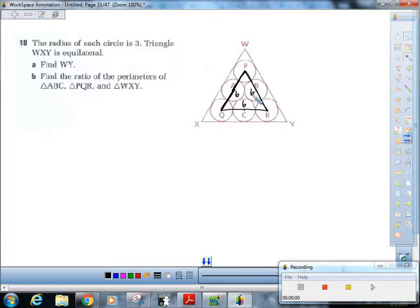The first question asks for WY. This is kind of like a common tangent problem where what you should do is make a rectangle. How do I know that that is a rectangle? Well, let's see, I know that those are right angles.